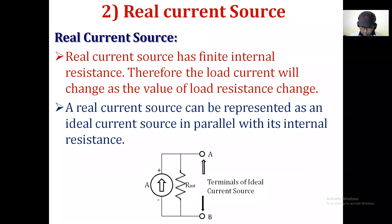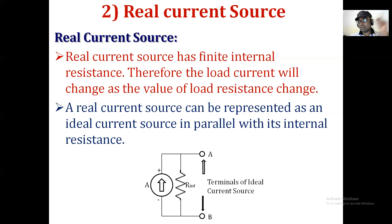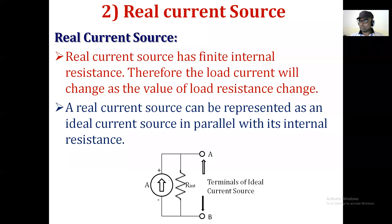This is the ideal current source — I have not shown internal resistance because the ideal current source's internal resistance has infinite value, so it is considered as open circuit. But if we want to represent the real current source, it has a finite internal resistance represented in parallel with that current source. Compare: real voltage source has internal resistance in series with the voltage source; real current source has a finite internal resistance in parallel with the current source. These are the two terminals A and B — we connect load resistance between them.